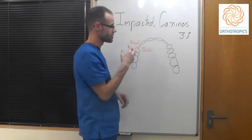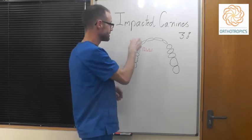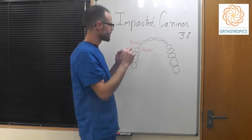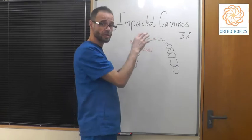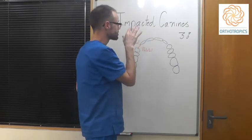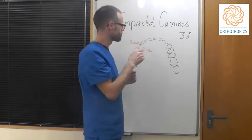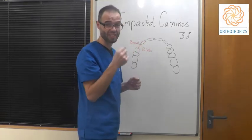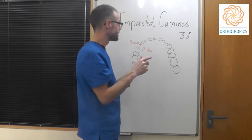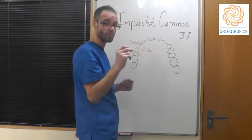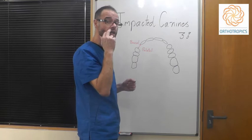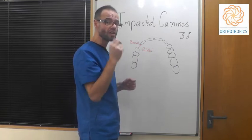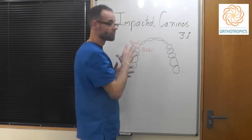If there's insufficient space for the tooth to come down into the dental arch, the tooth gets stuck. Sometimes these impacted canines can cause problems to the roots of tooth number one or tooth number two — the first or second permanent incisor — and that's a risk. If they're not down by the age of 12, or you don't see a nice big bulb on the outside by the age of 12, then you should be wondering what's going on with these canines.